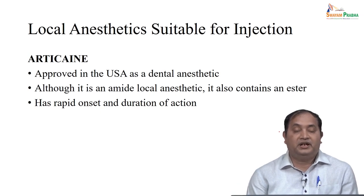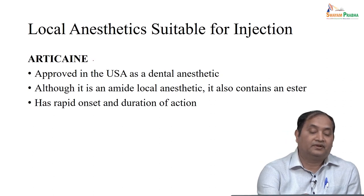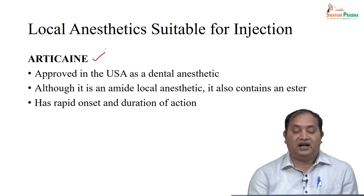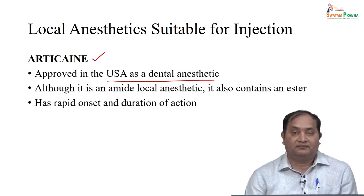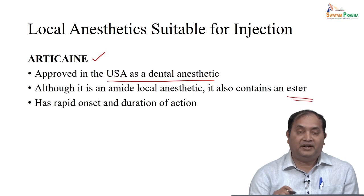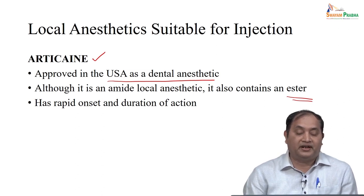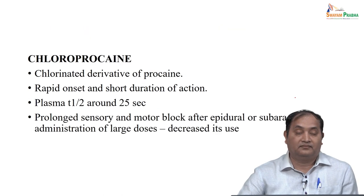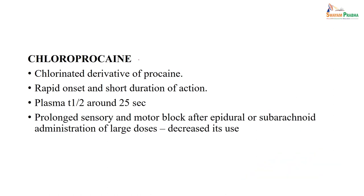Articaine is a local anesthetic agent suitable for injection, initially used in the US for dental anesthesia. Although it is an amide local anesthetic, it also contains an ester group, and its advantage is rapid onset and longer duration of action. Chloroprocaine is a chlorinated derivative of procaine; its onset is rapid but it has a shorter duration of action, with a plasma half-life of almost 25 seconds. It does provide a prolonged sensory and motor block and can be given by epidural and subarachnoid administration in large doses, though its use has decreased over time.